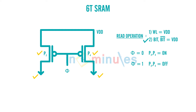When phi is equal to 1, P3 and P4 will both be off, and at that point these nodes will hold their previous values. So if I call this node 'bit' and this node 'bit bar,' for the read operation what I need to do is make phi equal to 0, so the bit and bit bar lines will become VDD — they get initially charged to VDD. This circuit is called a pre-charge circuit.